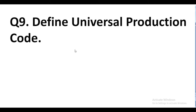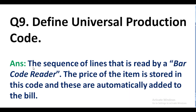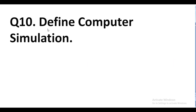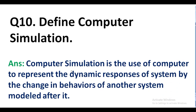Question number 9. Define universal production code. Answer. The sequence of lines that is read by a barcode reader. The price of the item is stored in this code and these are automatically added to the bill. Question number 10. Define computer simulation. Answer. Computer simulation is the use of a computer to represent the dynamic responses of a system by the change in behaviors of another system modeled after it.